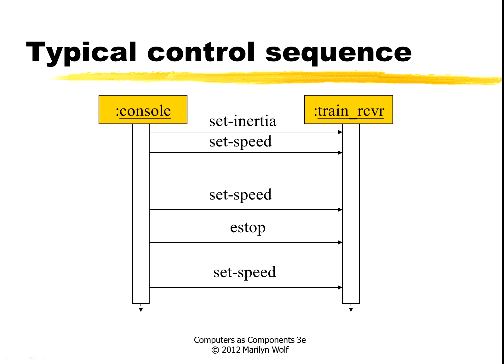If we look at a sequence diagram, we have the console on one side and the train on the other. Messages go only from the console to the train — there's no communication from the train to the console. We can send a variety of messages.